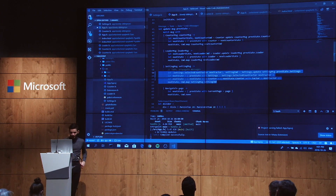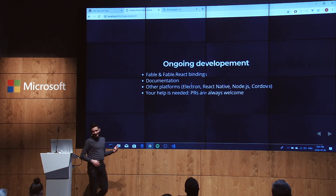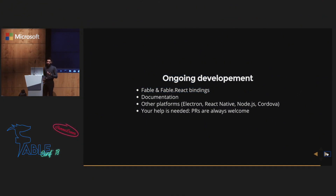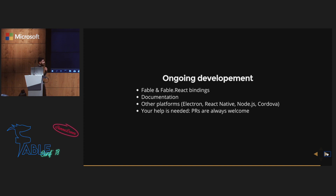There's ongoing development. Elmish defaults to React as the renderer, which is very good because React has a vast ecosystem of plugins we can bind and use. There's also ongoing documentation work — more documentation is definitely needed and your help is welcome. There's a lot of work to do on other platforms: Electron, React Native, Node, even Cordova. Pull requests are always welcome.